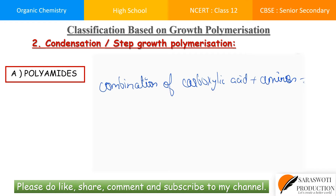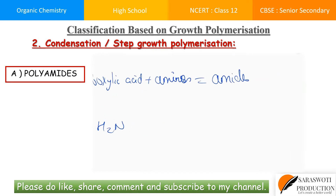So whenever a combination of carboxylic acid — that is R-COOH — plus H2N-R-NH2 happens, you get R-CO-NH-R. Then you know we're talking about polyamides.